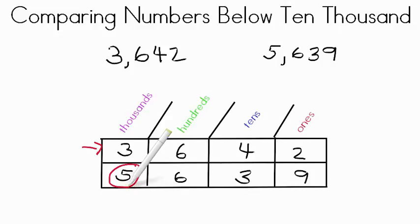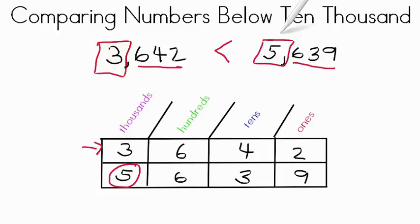So we know right away that 5 is greater than 3. So when we're comparing these, we can right away say 3,642 is less than 5,639. We don't even have to worry about the hundreds, tens, and ones. They don't matter. These guys don't matter. However, all we have to do in this case is look at our thousands and see which one is bigger. If these were exactly the same, then we'd look at the hundreds, the tens, and the ones. But in this case, the thousands themselves aren't the same, so we don't have to worry. We're just going to compare those two numbers.